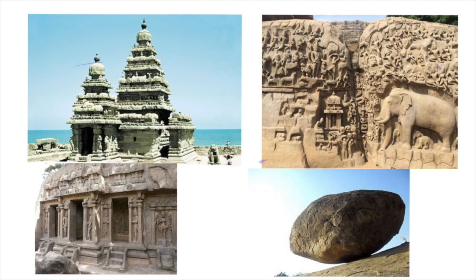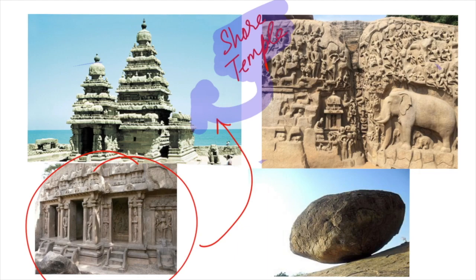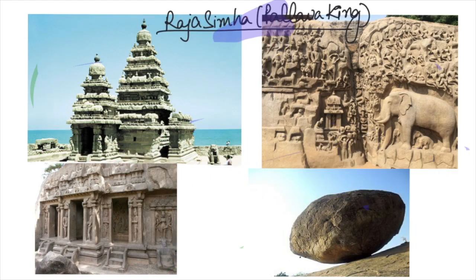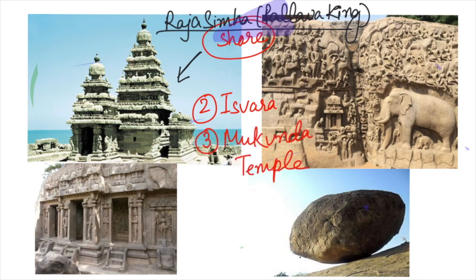After the cave temples, we move to the Shore Temple — another architectural masterpiece at Mahabalipuram. Here you can see the transition from rock-cut architecture toward free-standing temples. The Pallava king Raja Simha is responsible for this transition and is credited with the construction of three structural temples at Mahabalipuram: the Shore Temple, the Isvara Temple, and the Mukunda Temple.